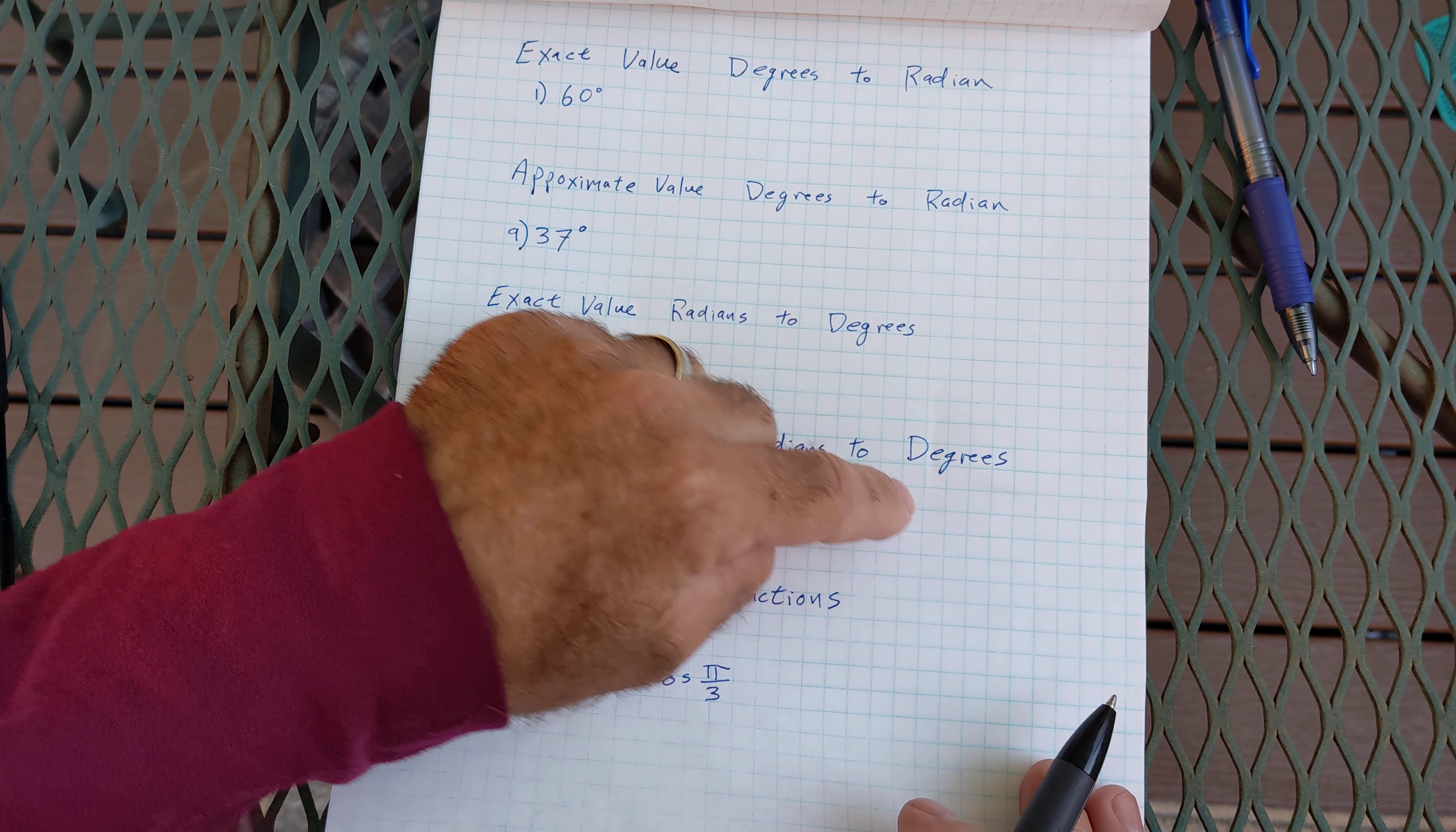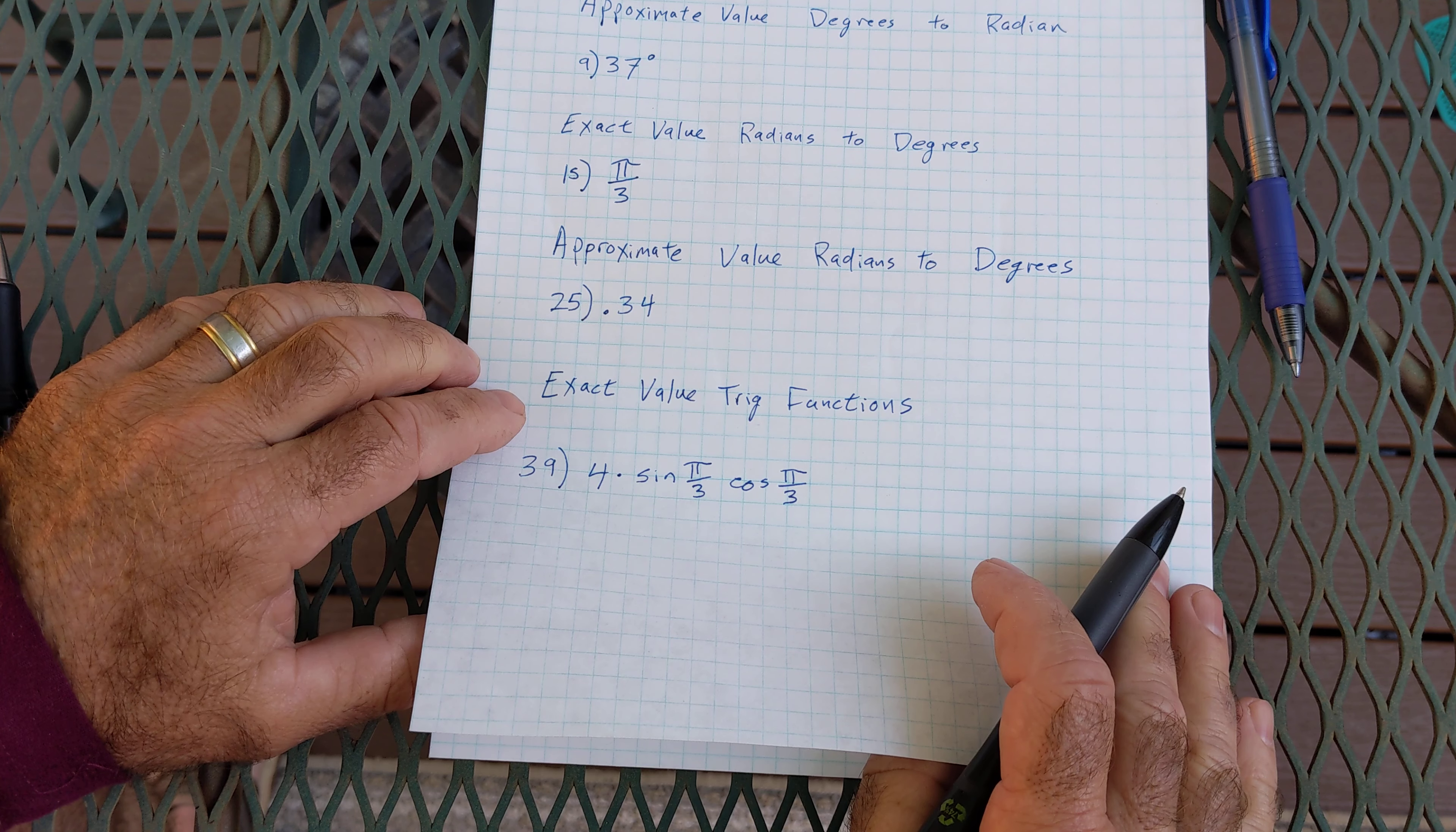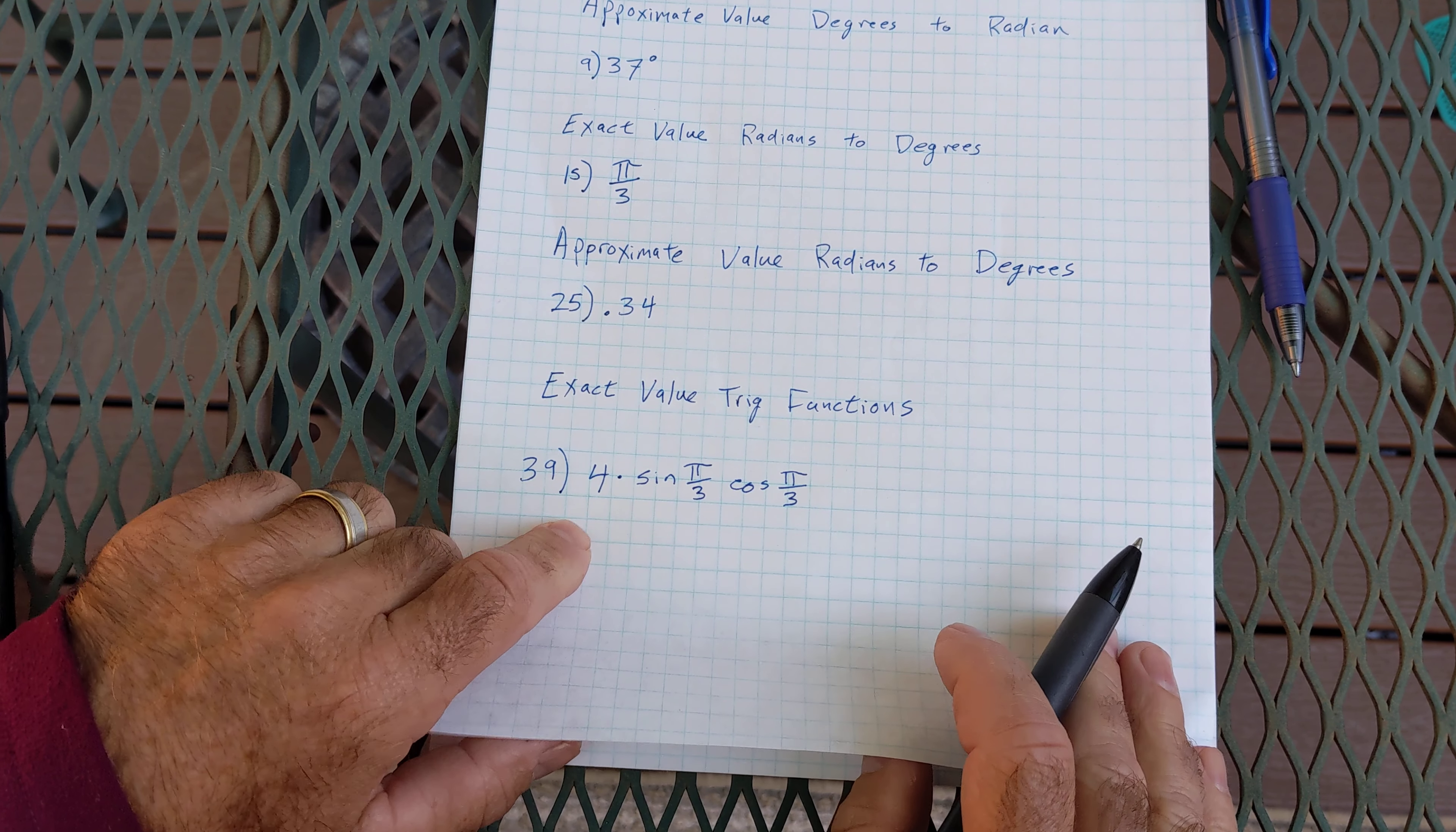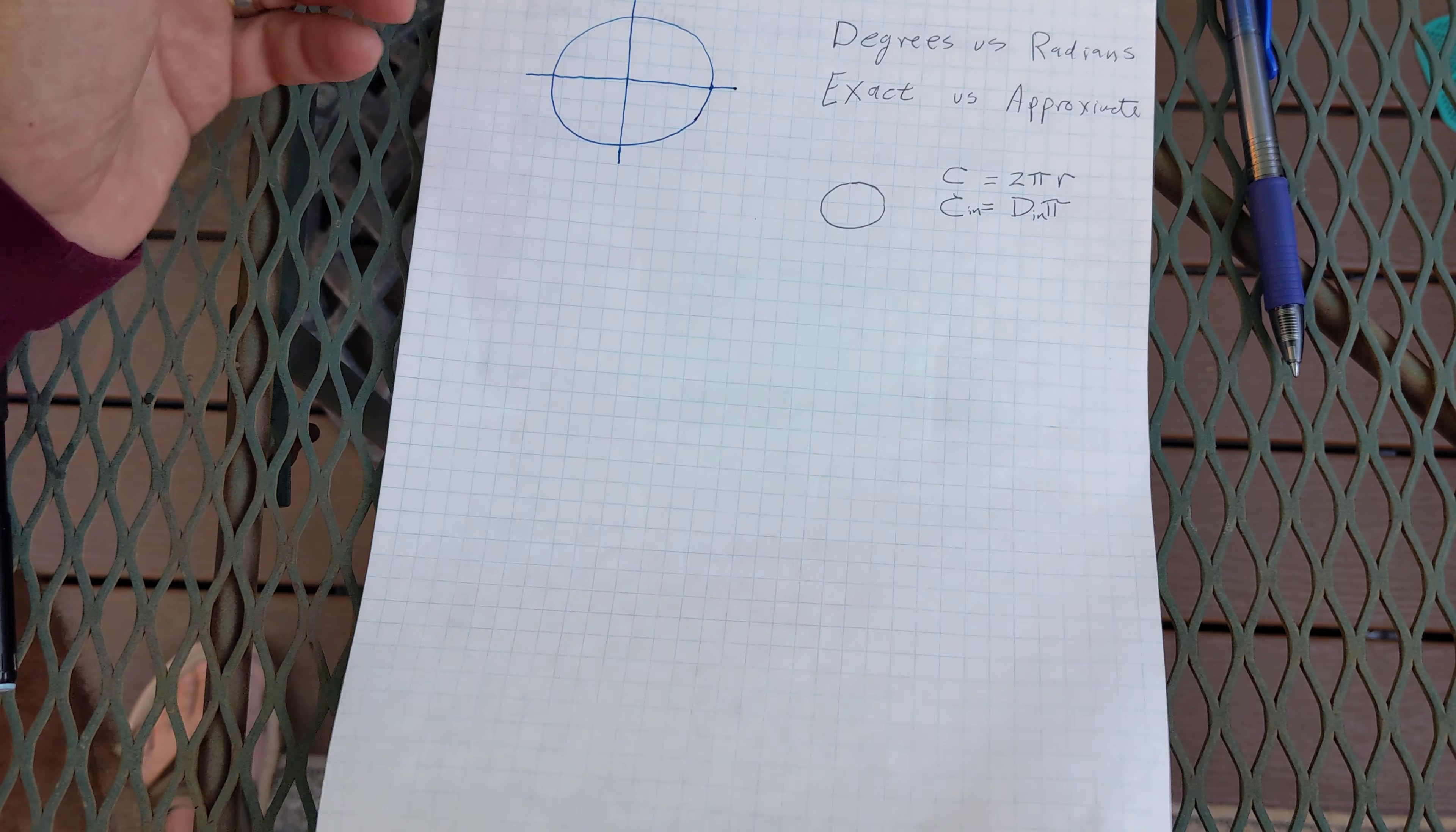Radians to degrees as approximate value, and then finally being able to calculate exact value of trig functions like four sine of pi over three cosine of pi over three. So let's go ahead and get started.